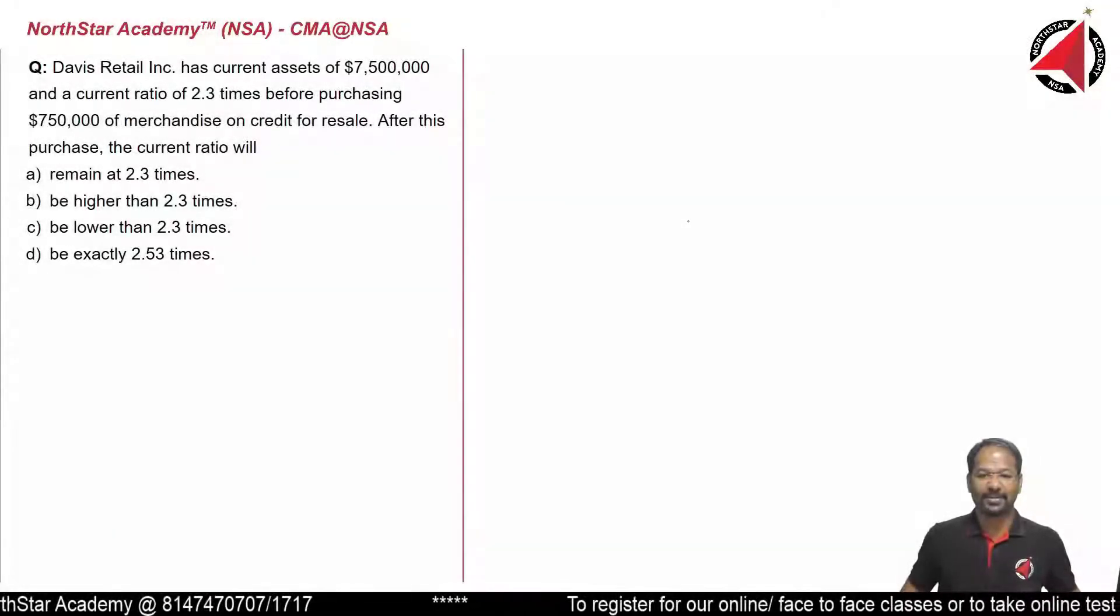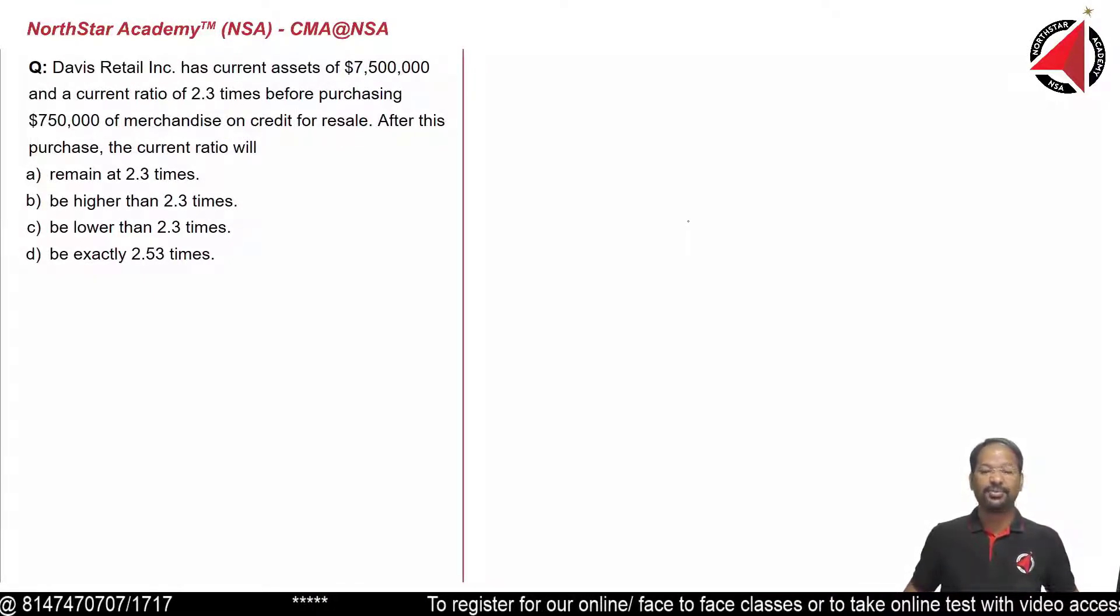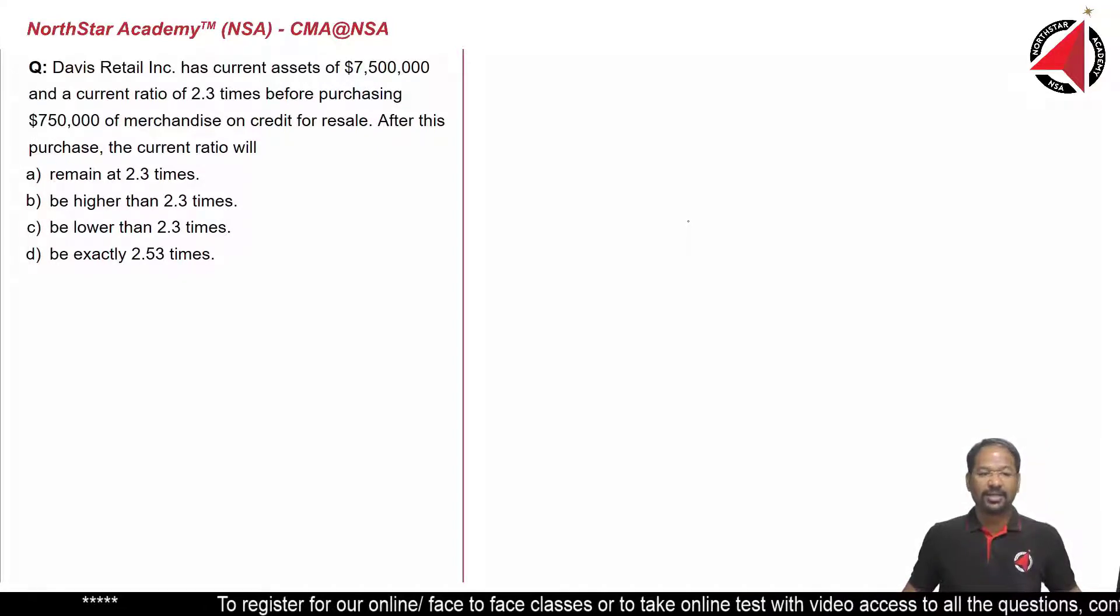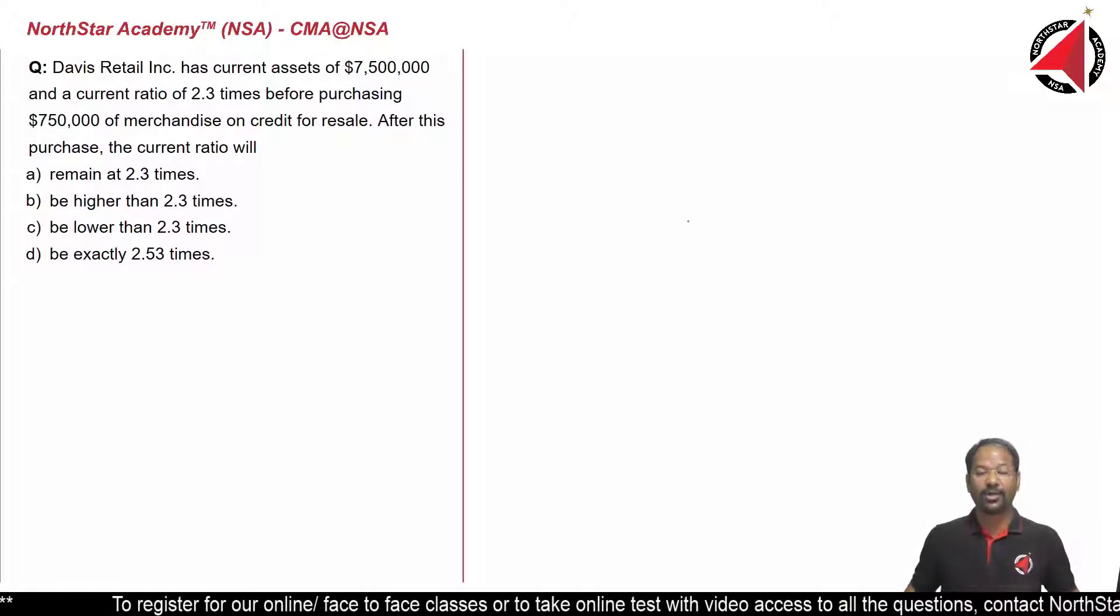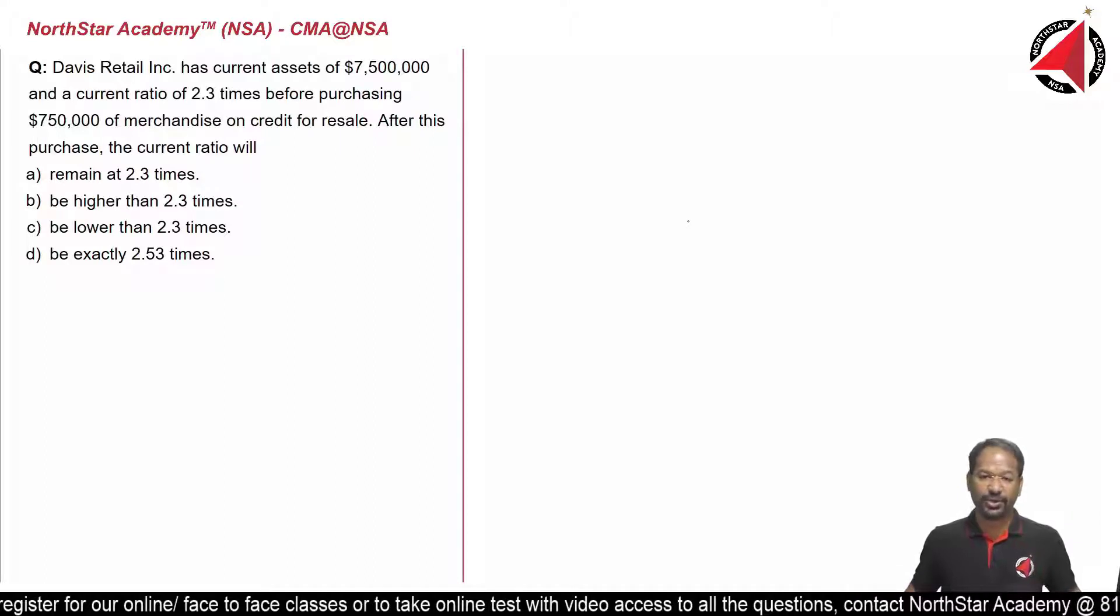Welcome to North Star. Davis Retail Inc has current assets of $7.5 million and a current ratio of 2.3 times before purchasing $750,000 of merchandise on credit for resale. After this purchase, the current ratio will...